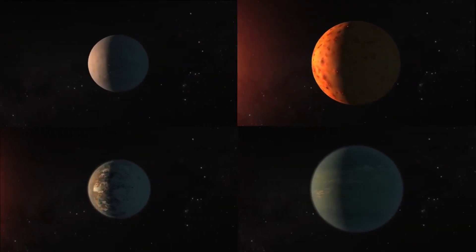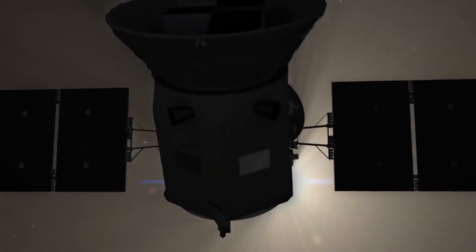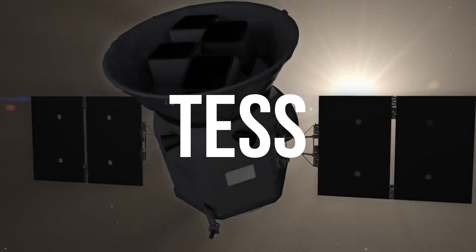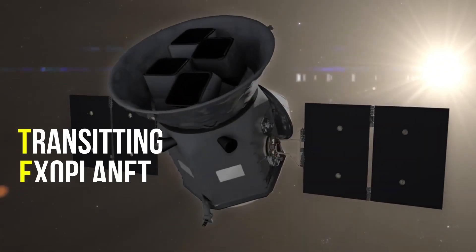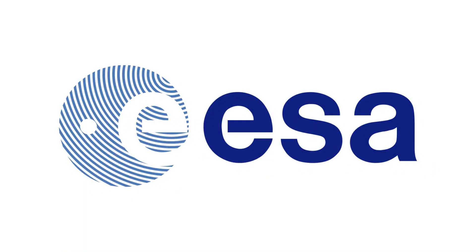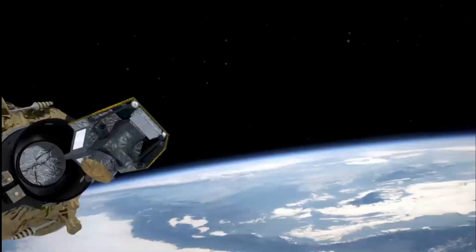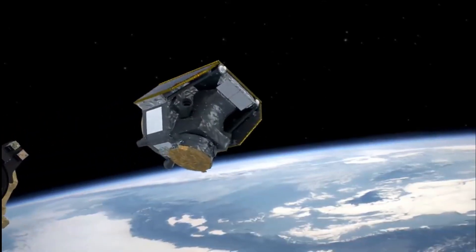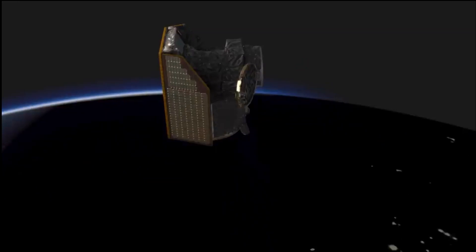For finding more life-harboring exoplanets, NASA's current planet-hunting spacecraft TESS, which stands for Transiting Exoplanet Survey Satellite, and European Space Agency's Characterizing Exoplanet Satellite, or CHEOPS, are stationed in their respective orbits to carry out this mission.